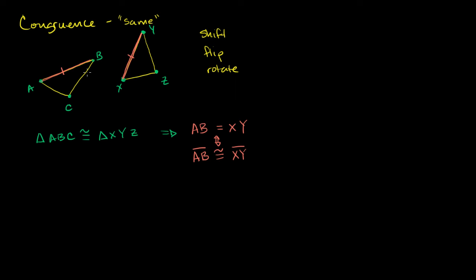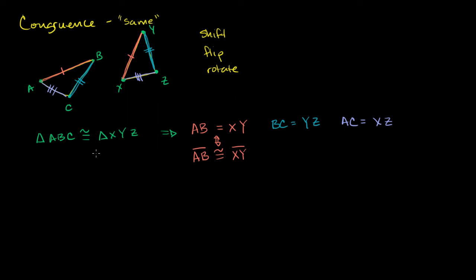We can go through all of the corresponding sides. If these two triangles are congruent, we also know that the length of BC is going to equal the length of YZ — we put double hash marks to show those two lengths are the same. And then for the third side, we also know that the length of AC is going to be equal to the length of XZ.